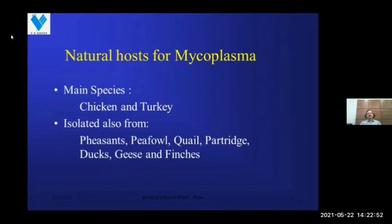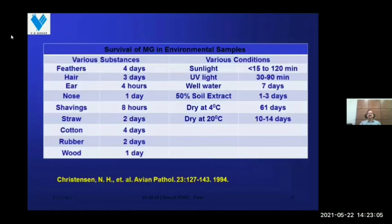Chicken and turkey are the main natural hosts for mycoplasma. Mycoplasmas are also isolated from pheasants, peafowls, quails, partridges, ducks, geese, and finches. Mycoplasma also survives in the environment.